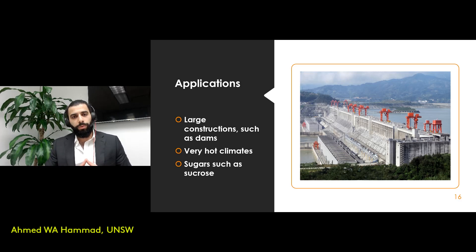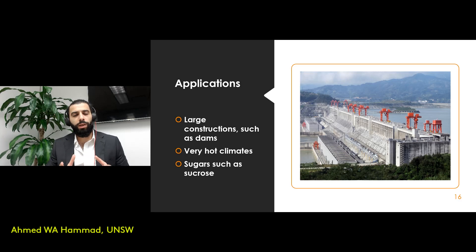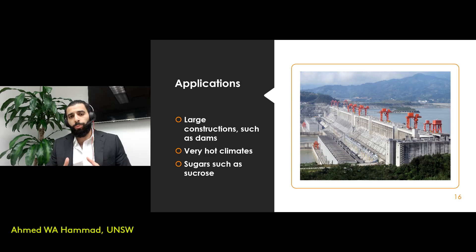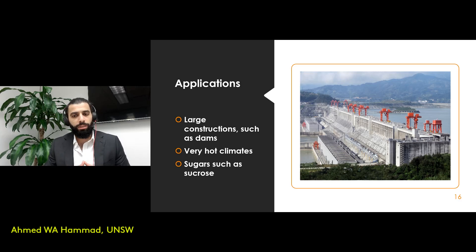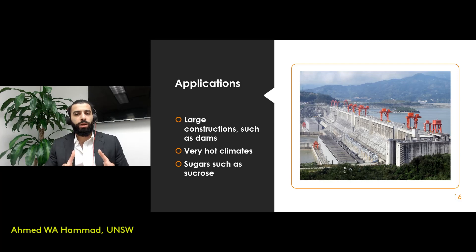Retarders are typically used for large construction projects such as dams, where there is a huge surface area and consequently very high heat of hydration. They are also used in very hot climates to reduce heat of hydration and avoid plastic cracking. A commonly adopted retarding material is sucrose, a sugar that is widely used as a retarder in concrete mixes.